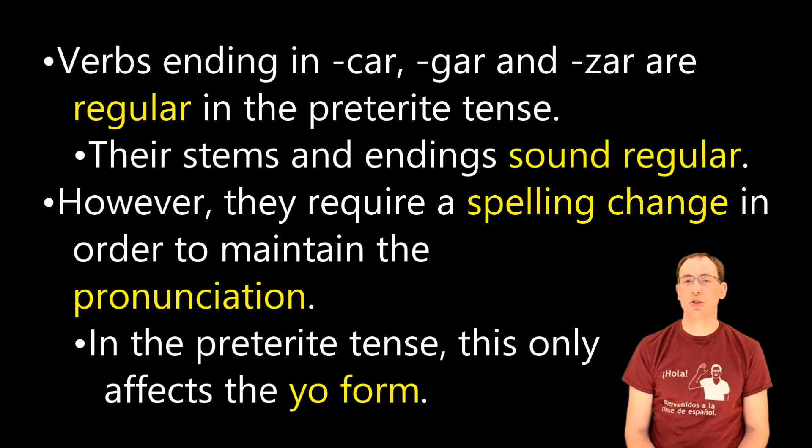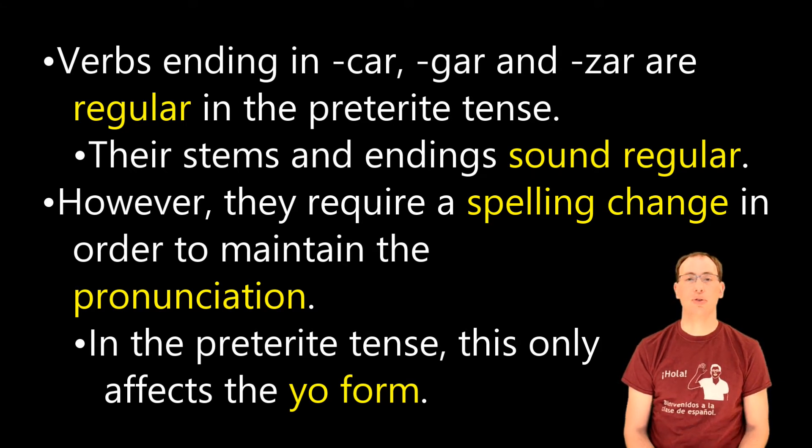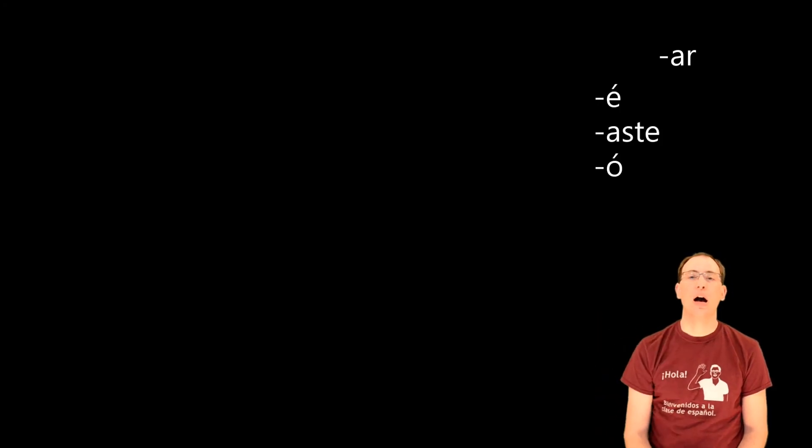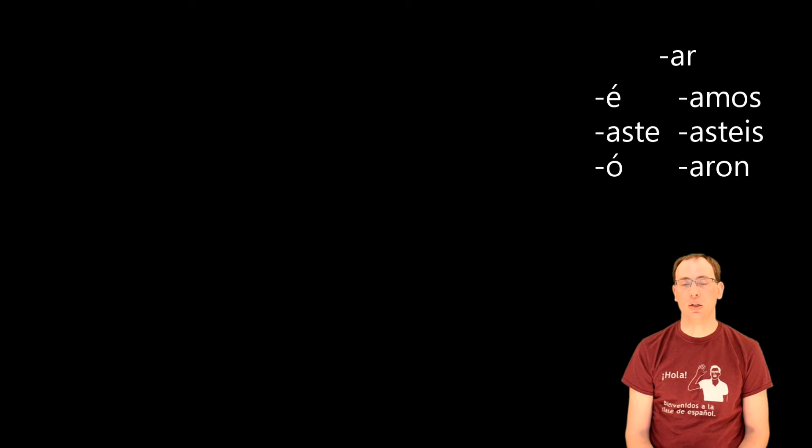Before I tell you the spelling changes for car verbs, gar verbs, and zar verbs, I want to go over the preterite tense endings for ar verbs, because all these car, gar, and zar, they're all ar verbs. So our ar verb endings in the preterite tense are: e, aste, o, amos, astes, aron. I'm just going to have those left up as we talk about the car verbs, gar verbs, and zar verbs, so we can look at and refer back to them throughout the video.